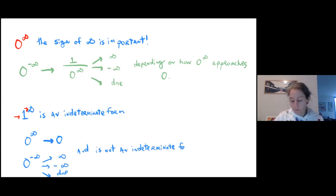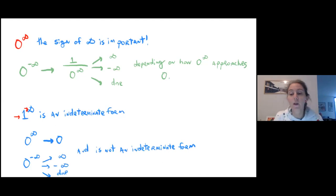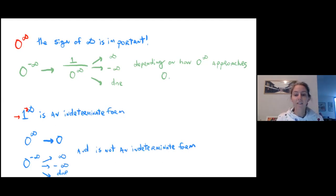To summarize: one to the infinity is an indeterminate form — it's like approaching one to approaching infinity. Zero to the infinity goes to zero. Zero to the negative infinity goes to either infinity, negative infinity, or does not exist. Neither of those is an indeterminate form, because zero to the infinity isn't hiding any value — it's literally zero. Hopefully that was helpful in giving you some intuition as to why zero to the infinity is not an indeterminate form and why one to the infinity is. Bye guys.